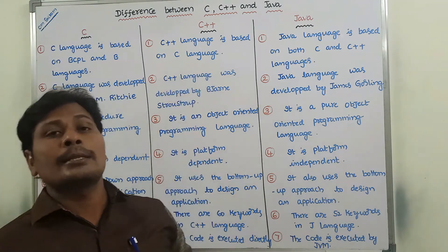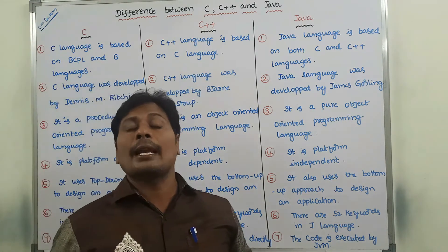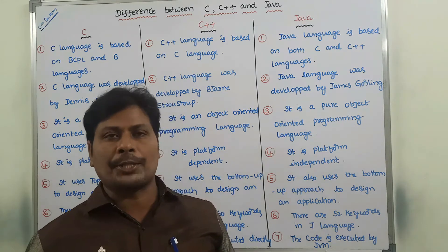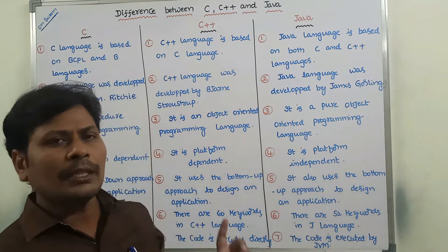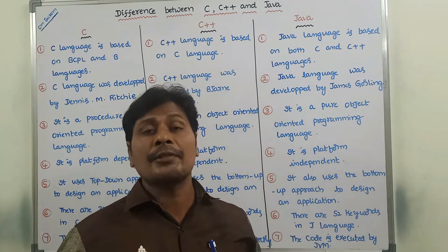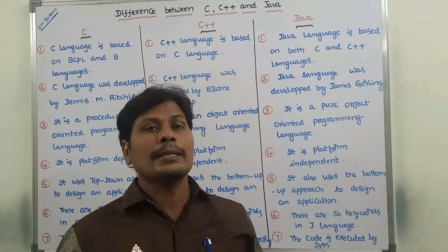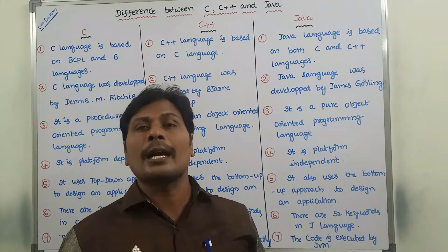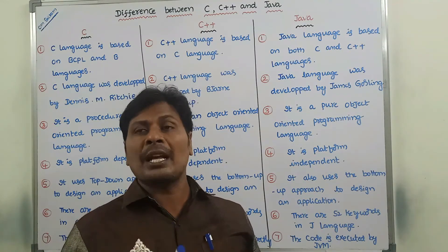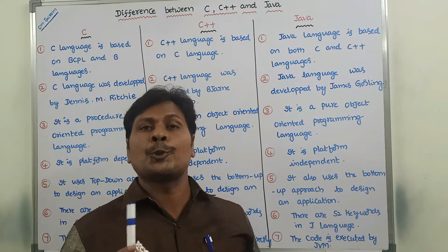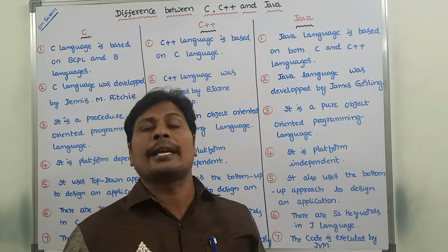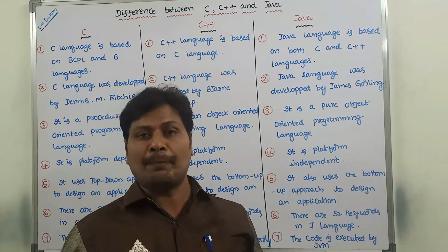C++ language is based on only C language. Java language is based on C and C++ languages. We can say that C++ is a superset of C, and Java is a superset of C++.